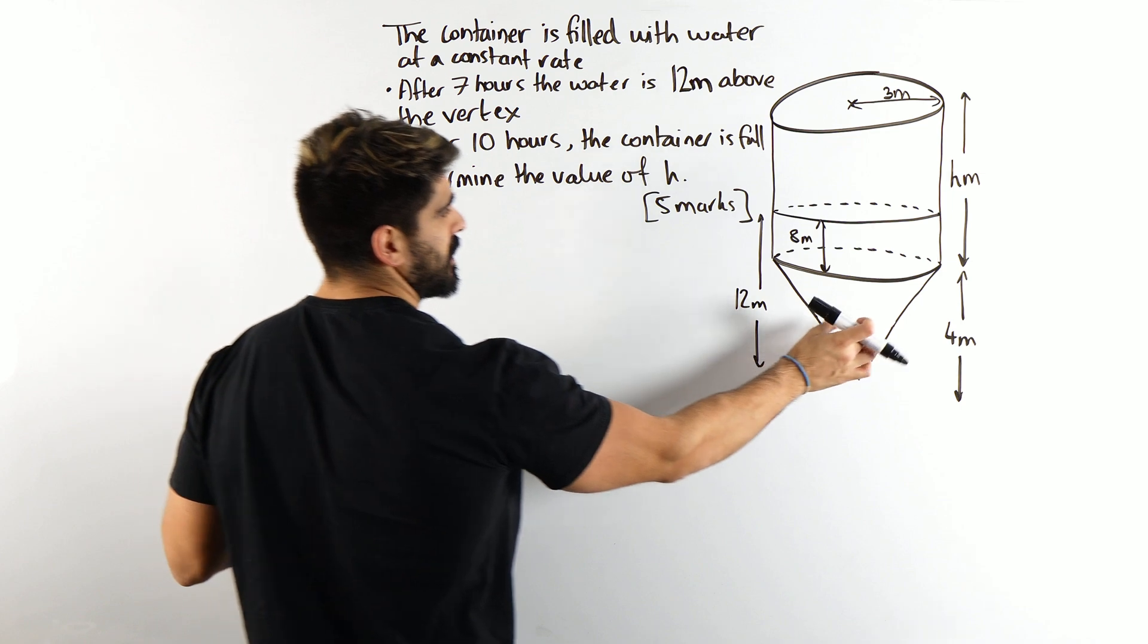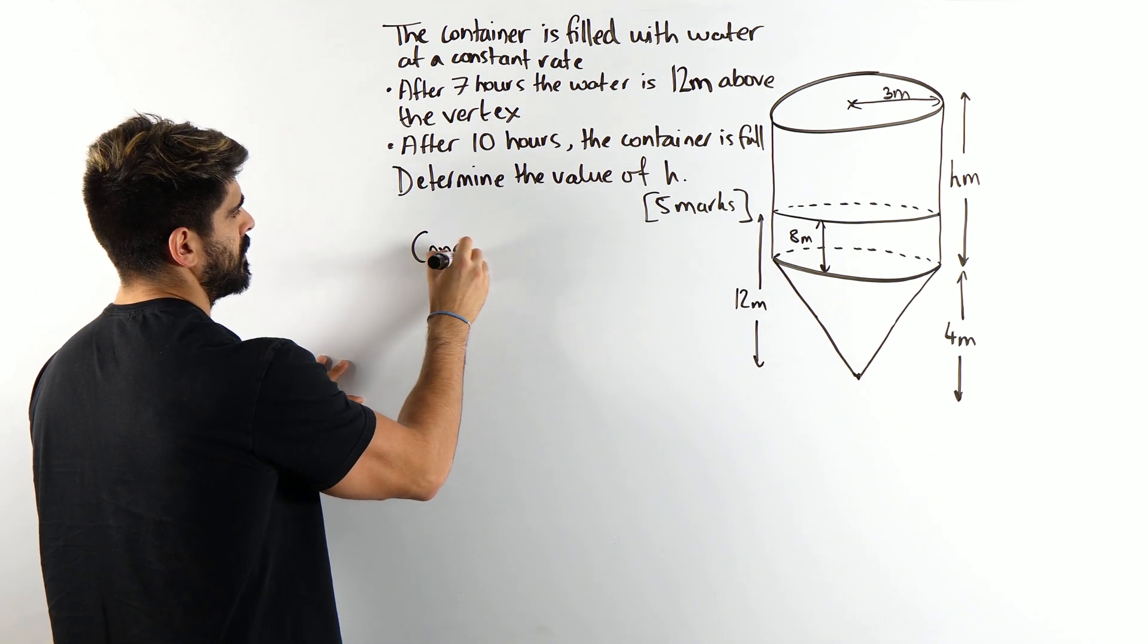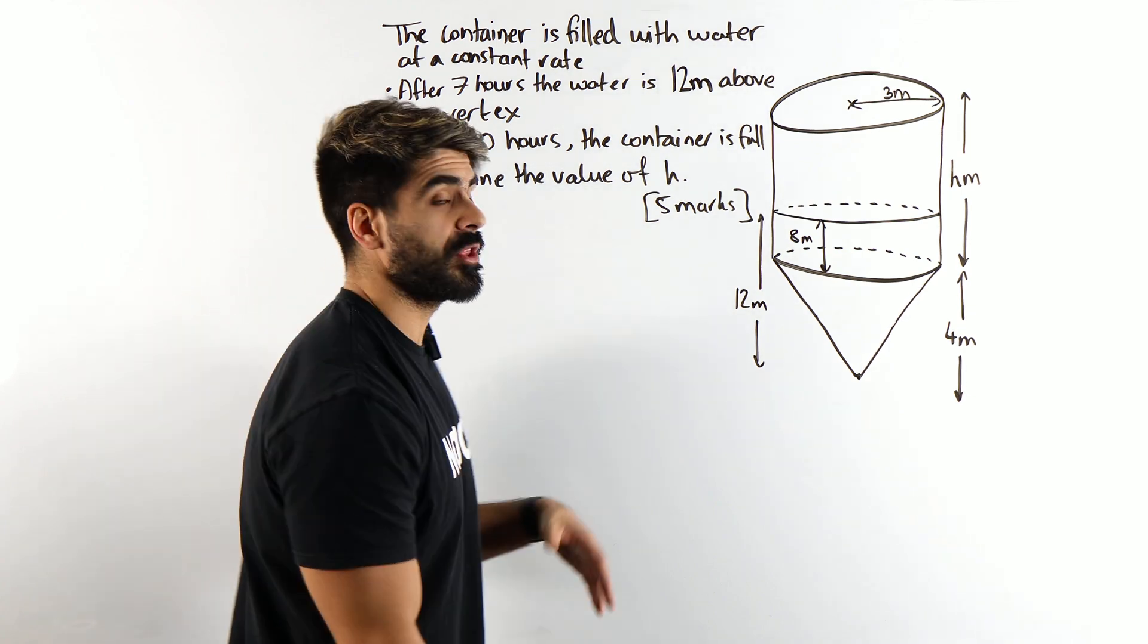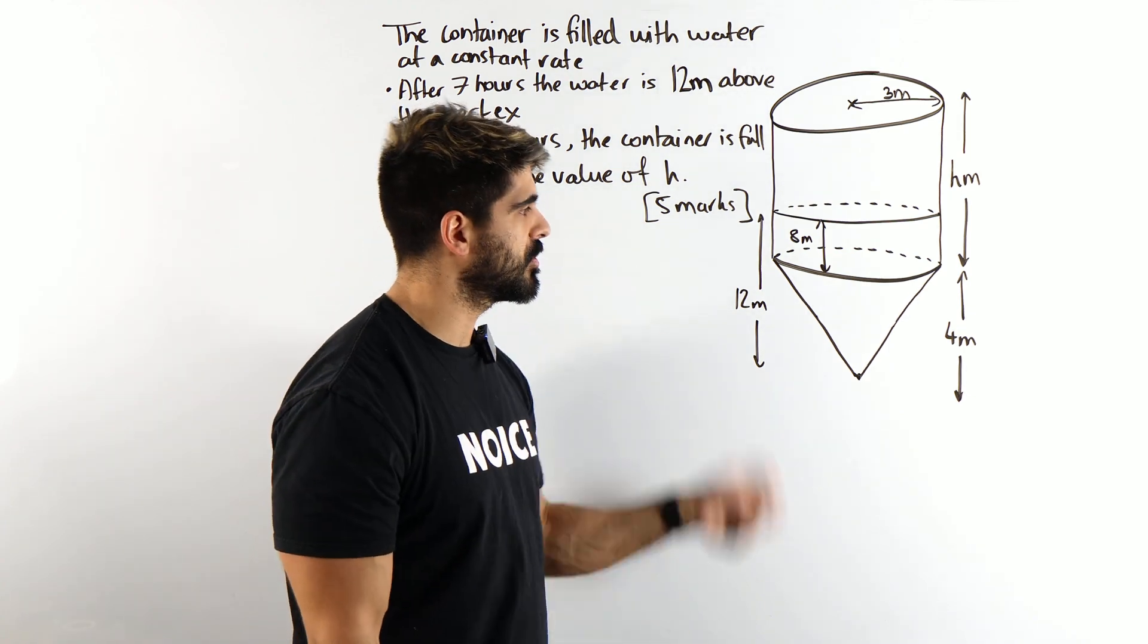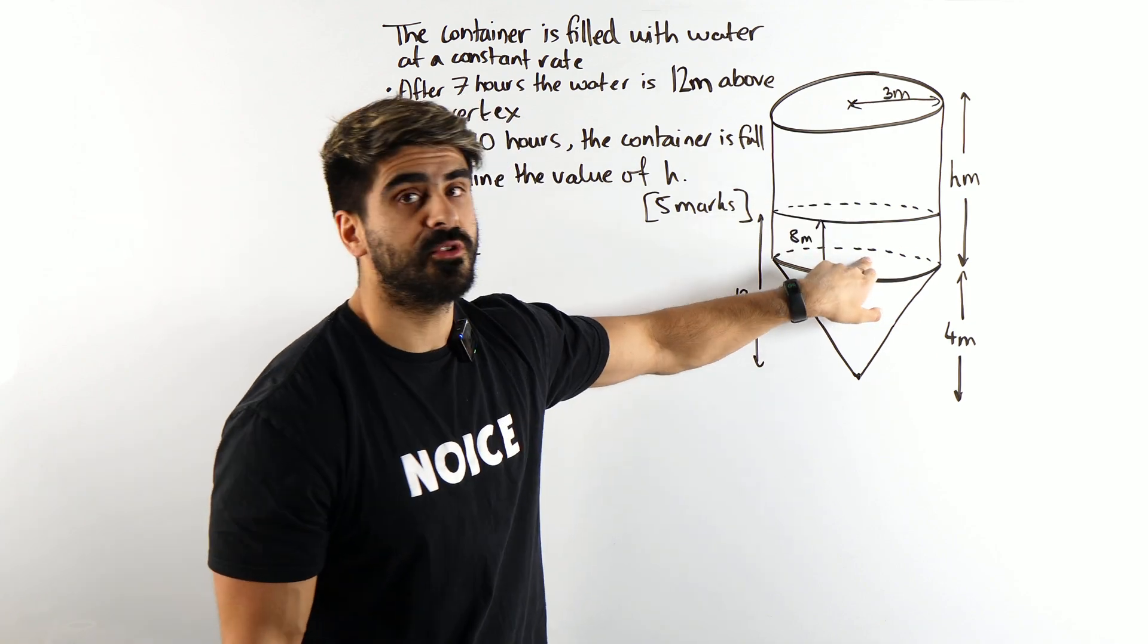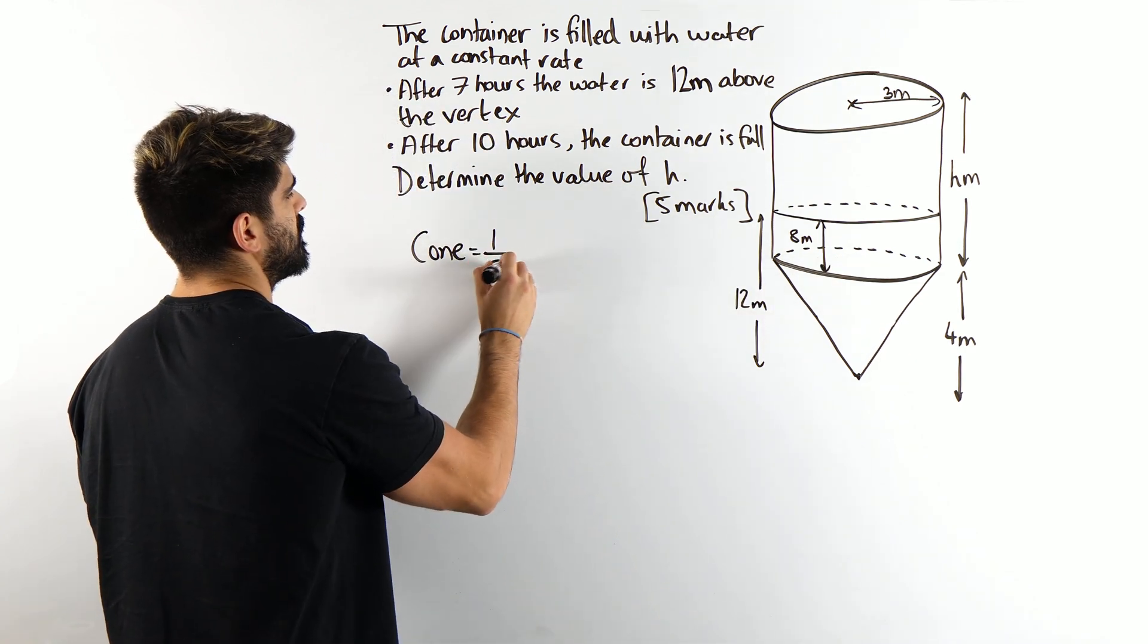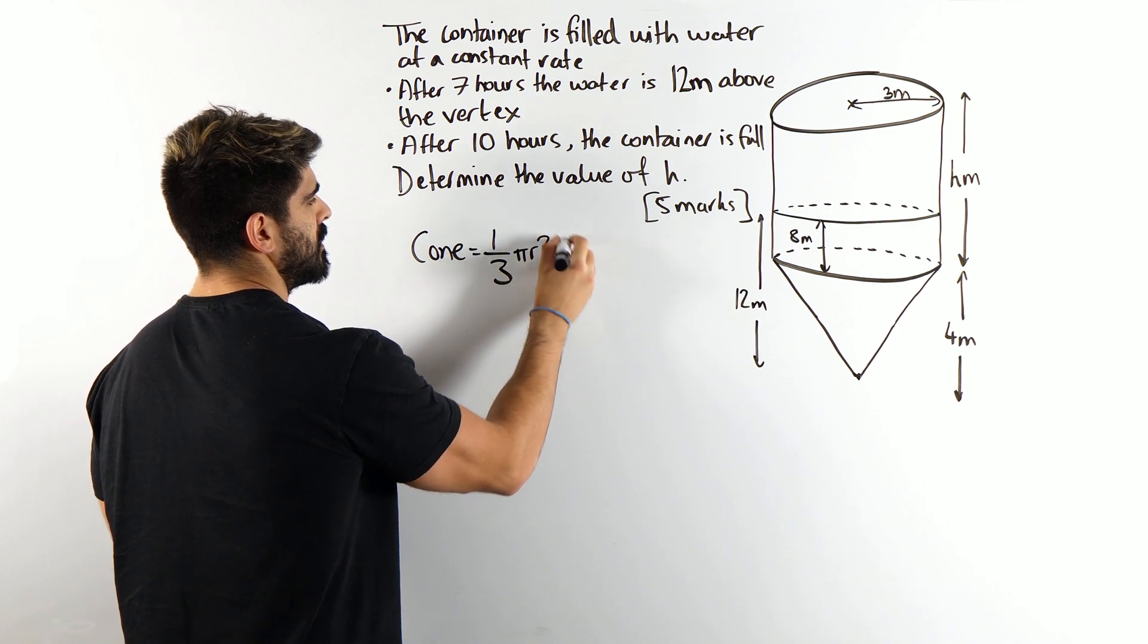So let's work out the full volume of this cone. What is the volume of a cone? Whether it's a cone or a pyramid, it's always one third of the base area times the vertical height. Now for a cone, the base area is a circle. So it's going to be one third circle times height.